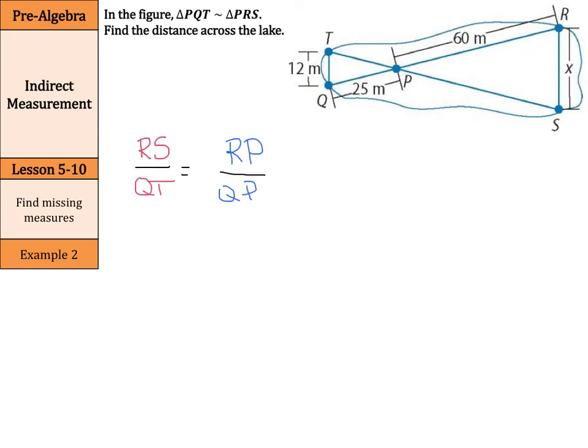So, now as we go in to solve, RS was our x over QT was 12 equals RP of 60 over QP of 25. And now we can cross multiply to solve. 25 times x is going to equal 12 times 60, and 25x equals 720.